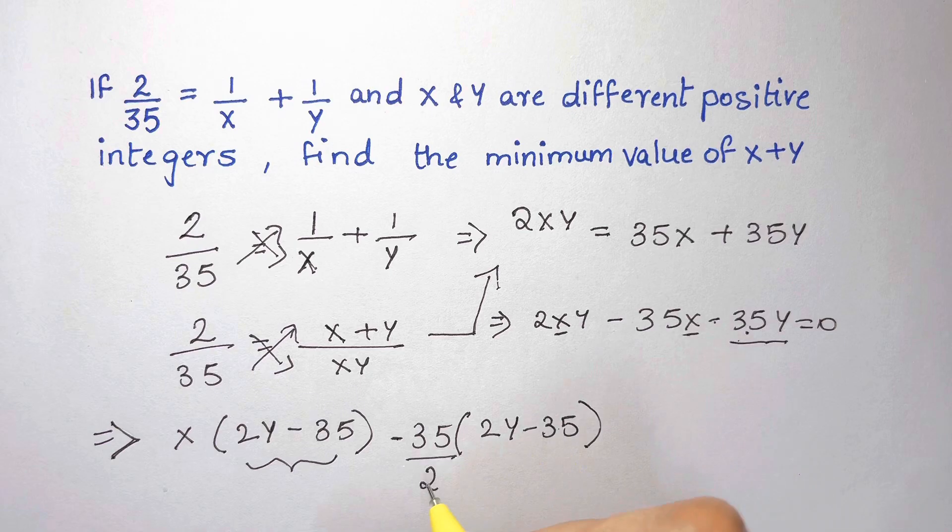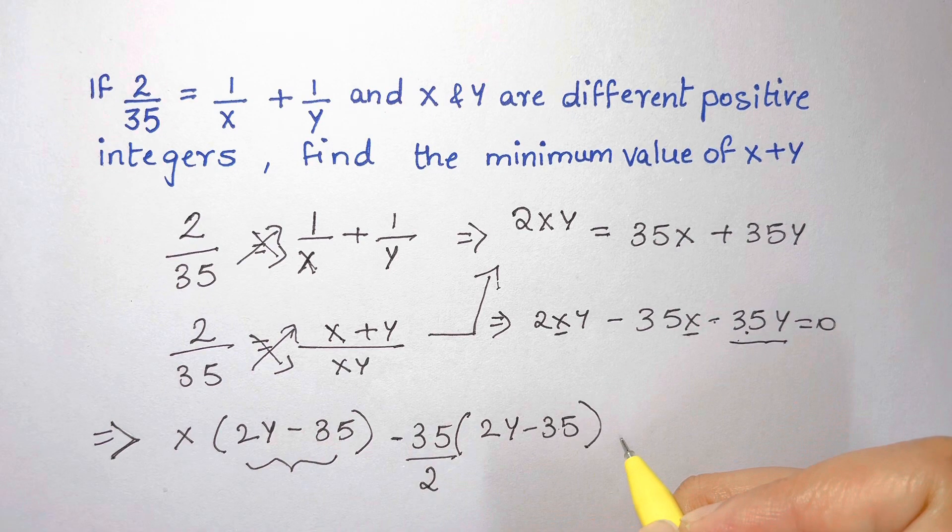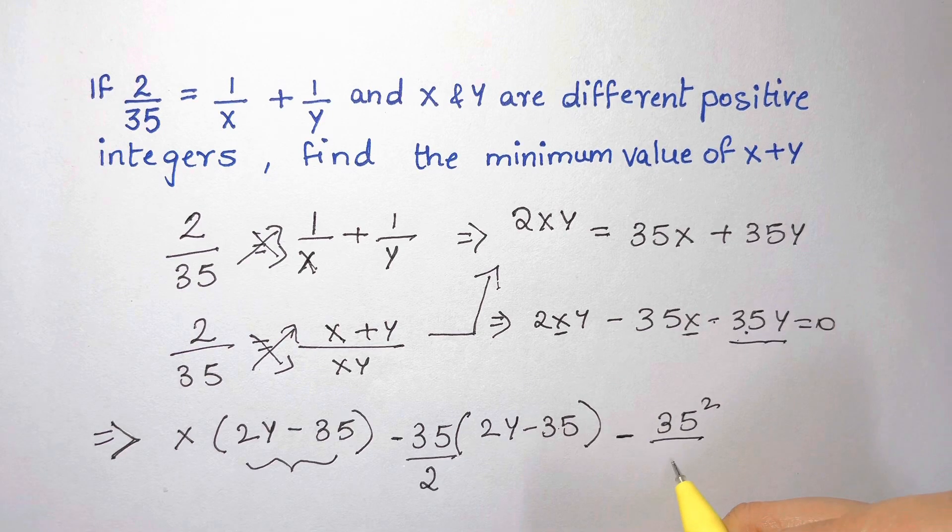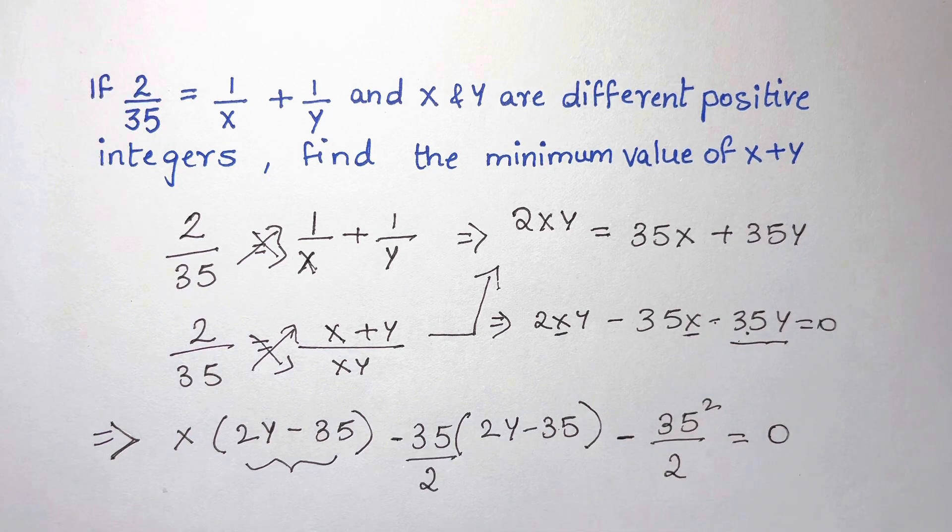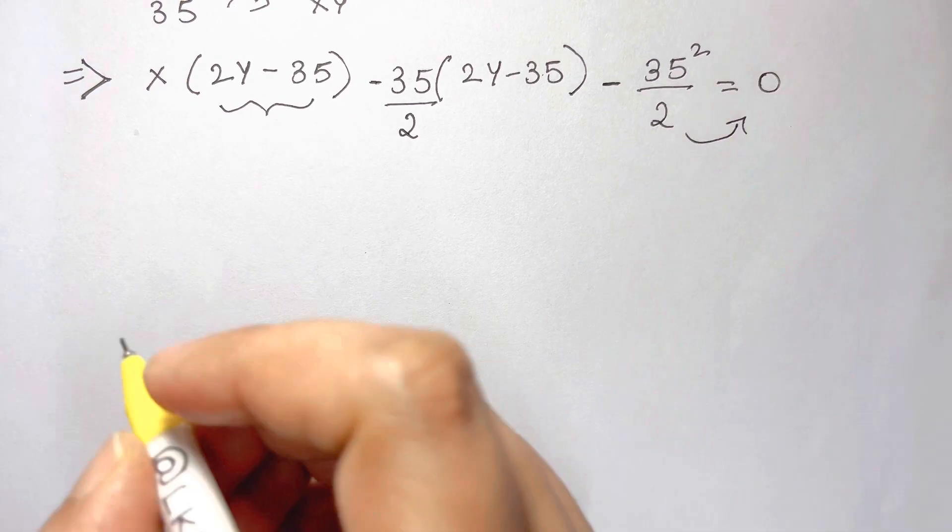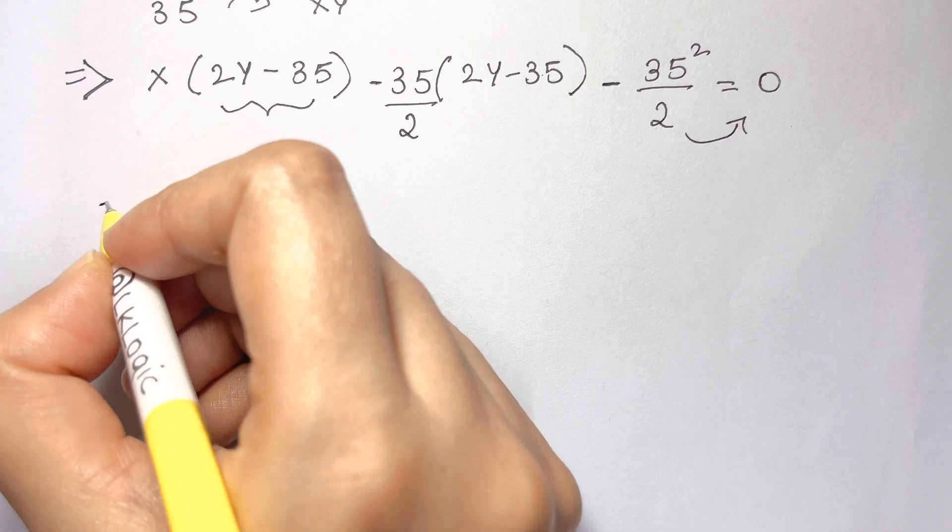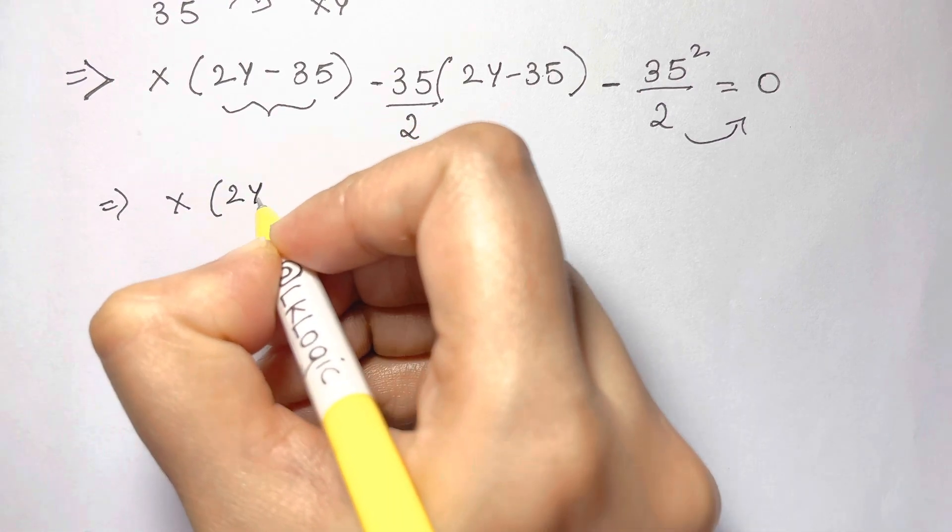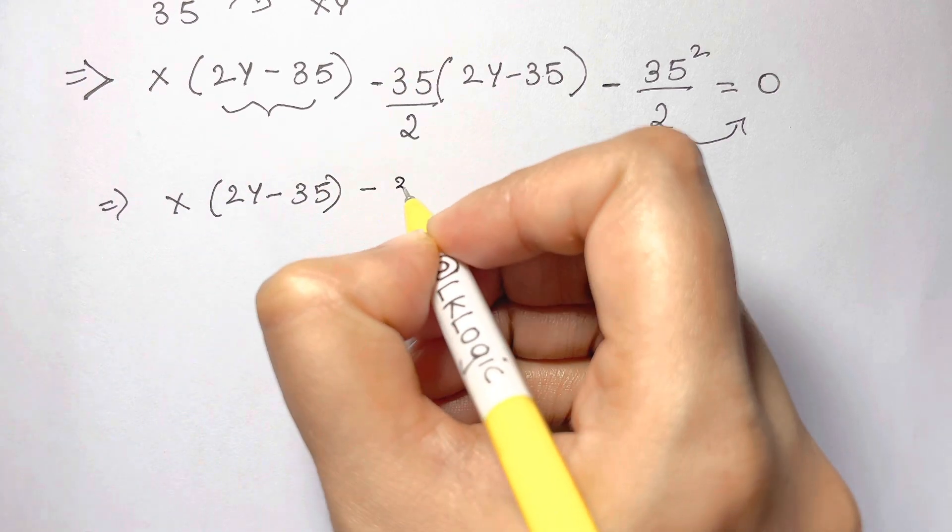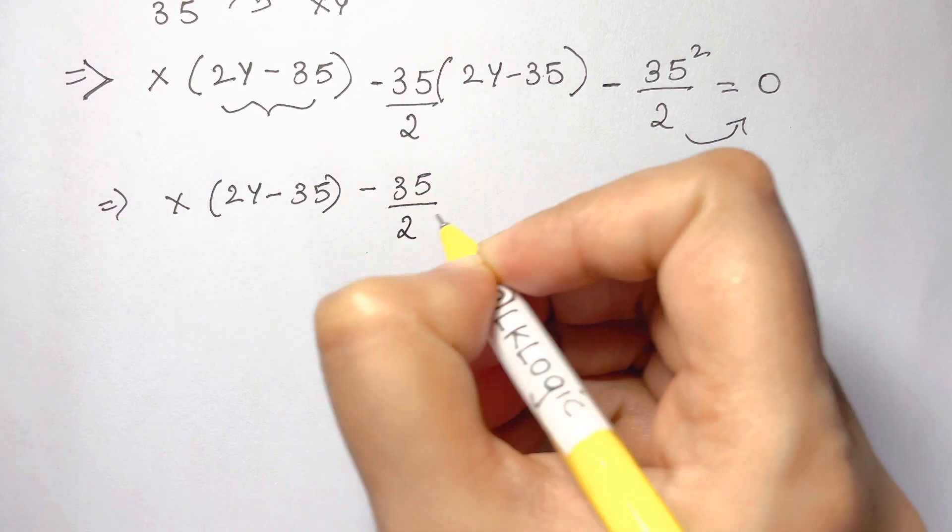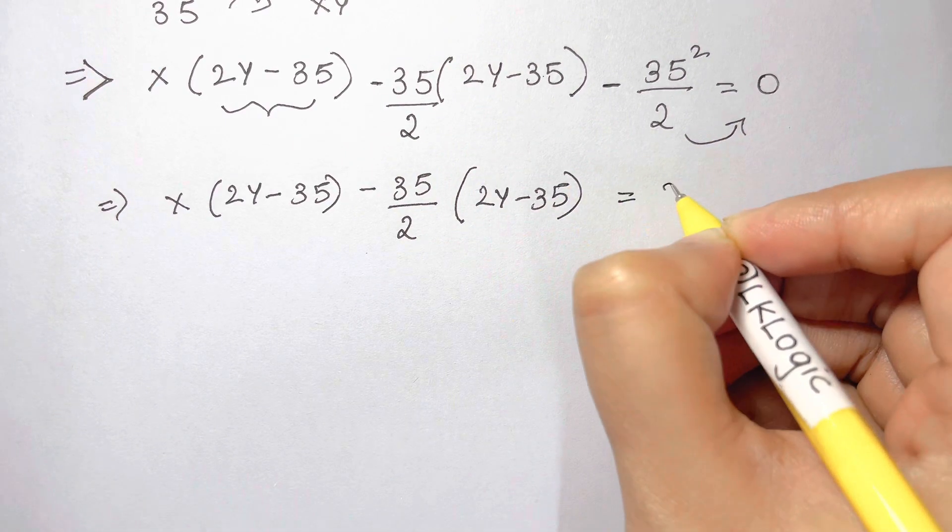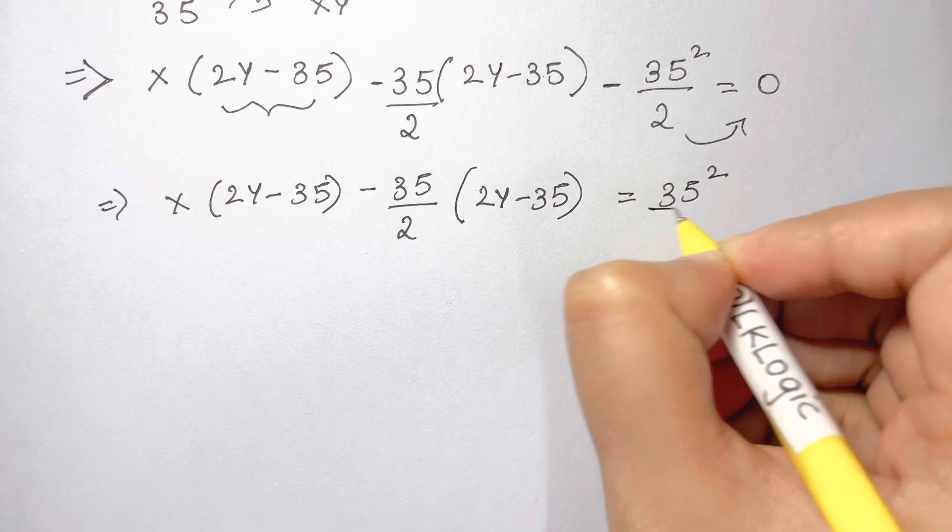As we have added 35 square over 2, we have to subtract 35 square over 2, which is equal to 0. Now, we are going to send this 35 square this side in the stem. So let's write it down. We have x times 2y minus 35. Then we have minus 35/2 times 2y minus 35 is equal to 35 square over 2.